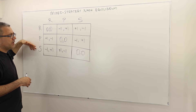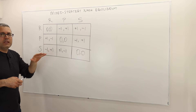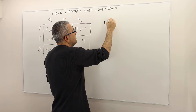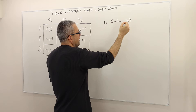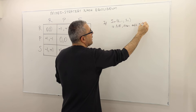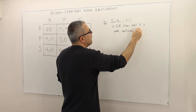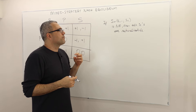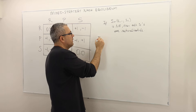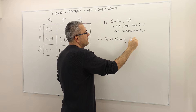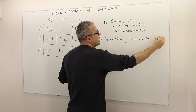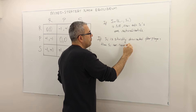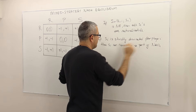If some strategies are not rationalizable, that means the players will never play them, and hence you can ignore them. One thing is very important: if a strategy profile S = (S1, ..., SN) is a Nash equilibrium, then all S_i's are rationalizable. That's a very important statement. Meaning, if you find a strategy S_i that is strictly dominated for player i, then S_i can never be part of a Nash equilibrium.